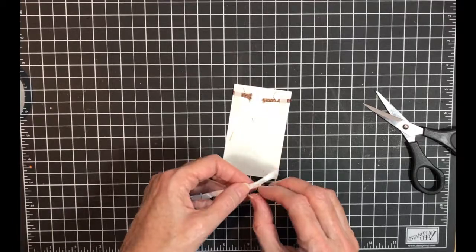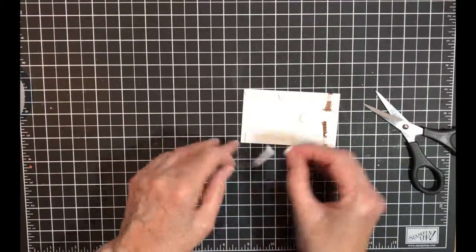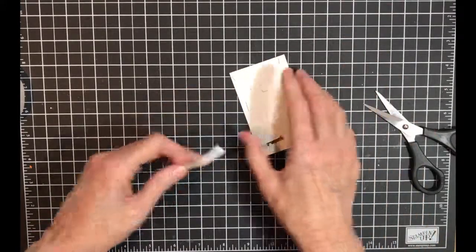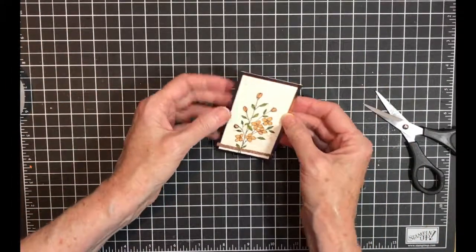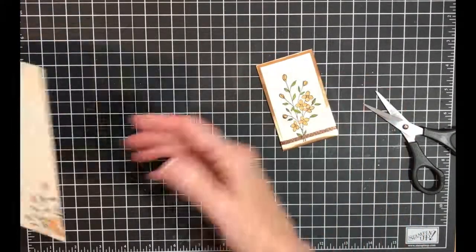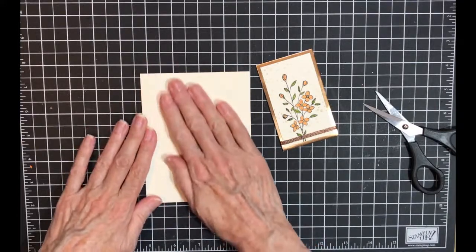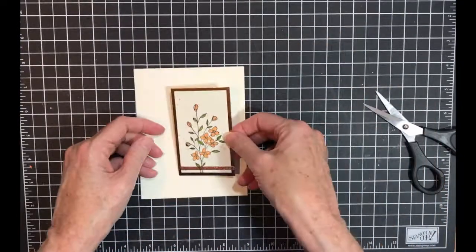Okay, there we go. This copper foil has a tendency to bend, that's why I'm using so many dimensionals. Okay, this is a quick and easy card, very simple. I'm going to put it right in the center like so.